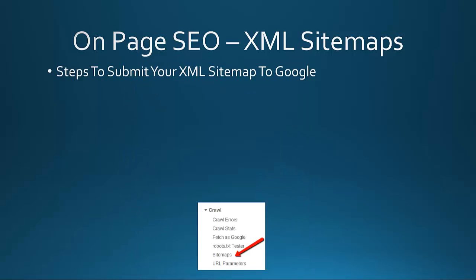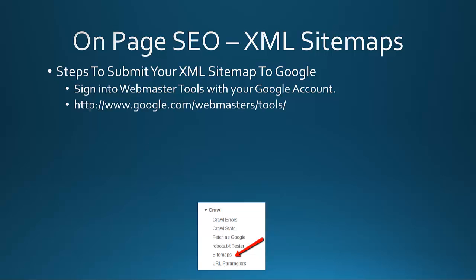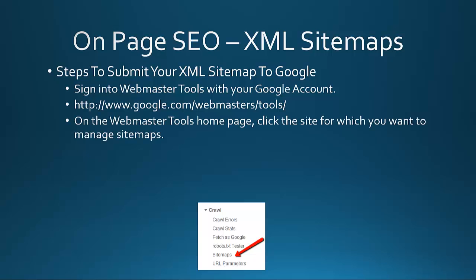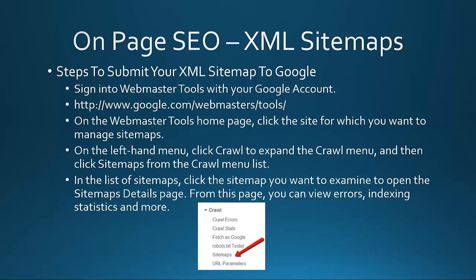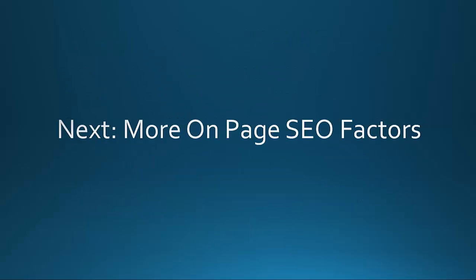Steps to submit your XML sitemap to Google: First, sign into your Google Webmaster Tools account at google.com/webmasters/tools. On the Webmaster Tools home page, click the site you want to manage sitemaps for. On the left-hand menu, click Crawl to expand the menu, then click Site Maps. From the list, click the sitemap you want to examine to open the sitemap details page, where you can view errors, indexing statistics, and more. You can then submit your sitemap created using third-party tools.